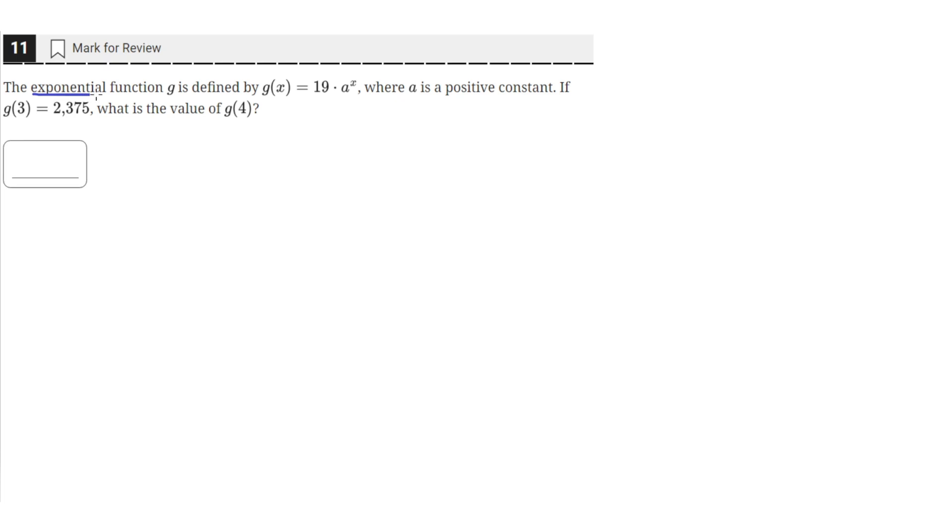The exponential function g is defined by g of x equals 19 times a raised to the x power, where a is a positive constant. If g of 3 equals 2375, what is the value of g of 4?